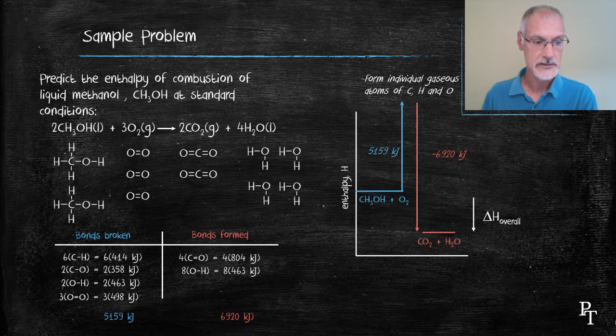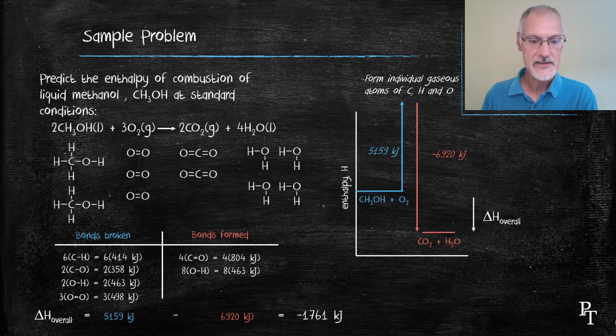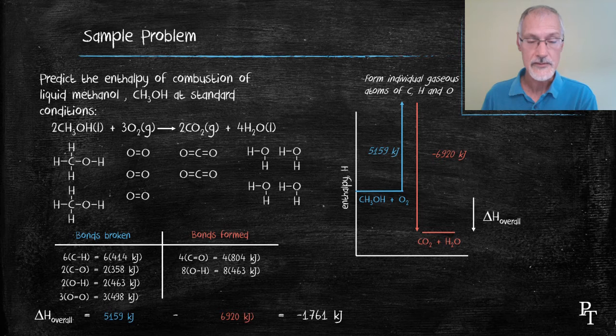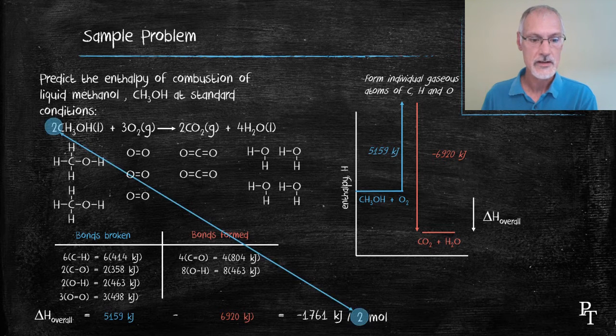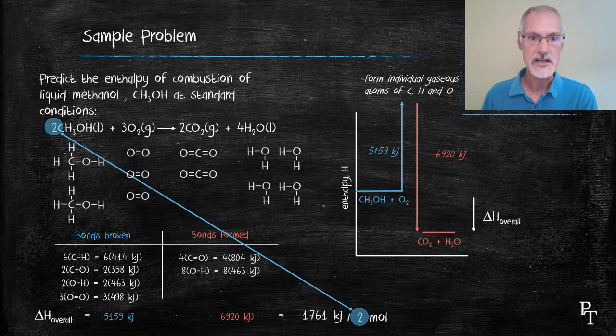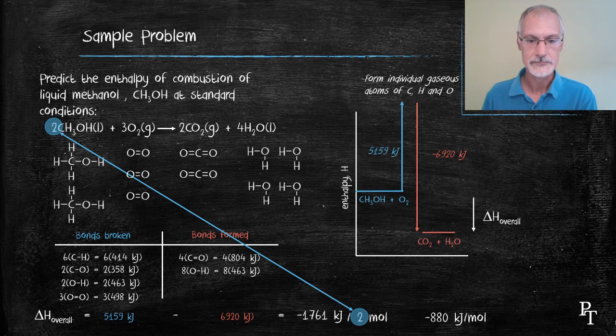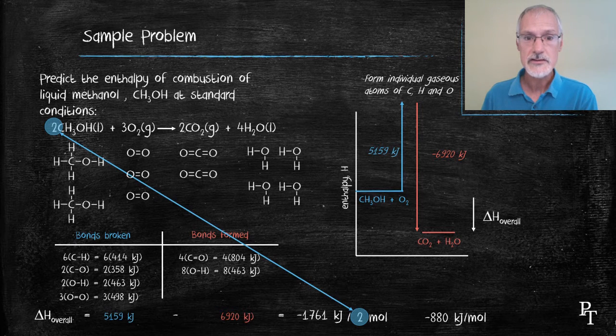To determine that value, I just simply do the addition that's shown here. So it's negative 1761 kilojoules. Now that's the amount of energy that's generated from two moles of methanol. If I want to know the heat for burning one mole of methanol, I need to divide that by two. So negative 880 kilojoules per mole of methanol.